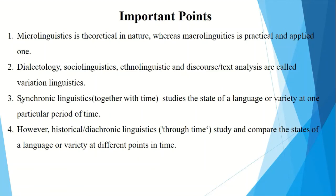Let's review the important points of this lecture. Micro linguistics is theoretical in nature, whereas macro linguistics is practical and applied. Dialectology, sociolinguistics, ethnolinguistics, and discourse or text analysis are called variational linguistics. Synchronic linguistics studies the state of a language or variety at one particular period of time. In contrast, historical or diachronic linguistics studies and compares the states of a language at different points in time. The basic difference is studying language at one particular period versus studying language across different periods — that is the key distinction between synchronic and diachronic linguistics.